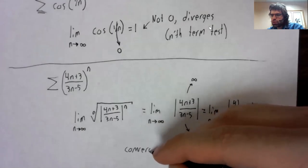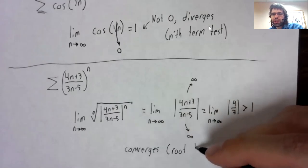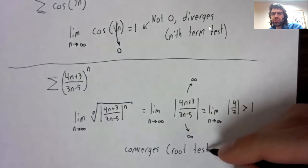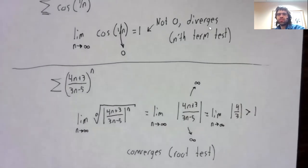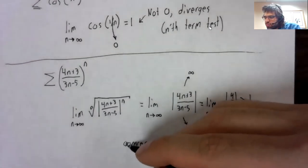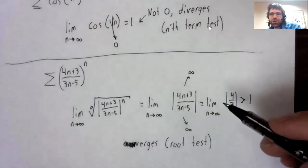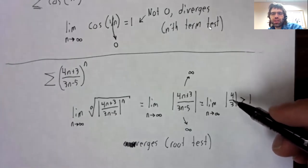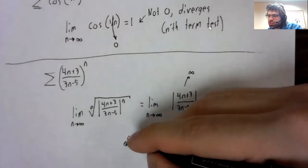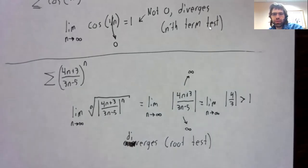And we get a limit that's greater than one. And the root test works in the same way that the ratio test works in the sense that you look at this limit, and if it's greater than one, the series diverges.